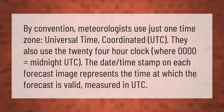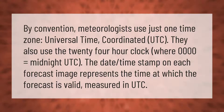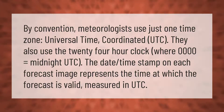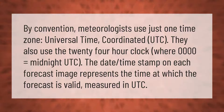By convention, meteorologists use just one time zone: Coordinated Universal Time (UTC). They also use the 24-hour clock, where 0000 equals midnight UTC.